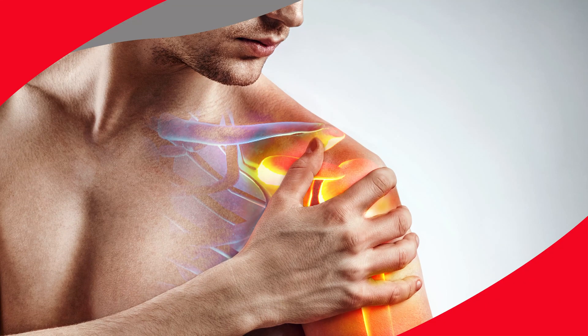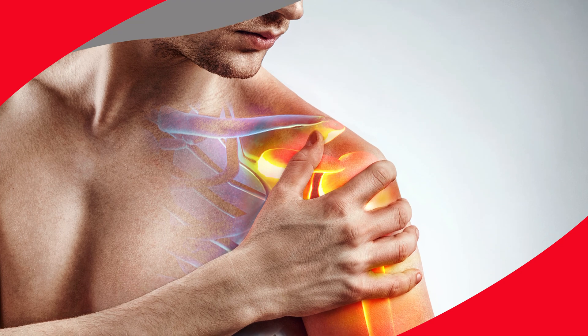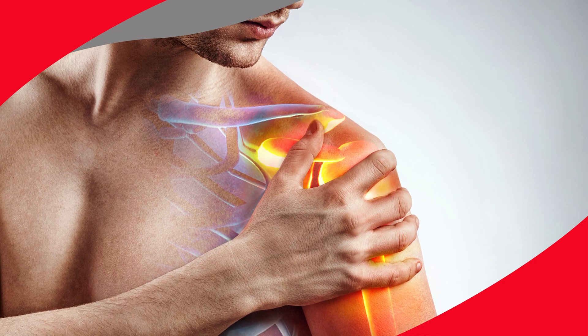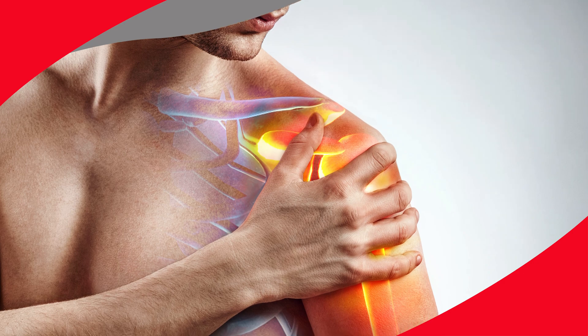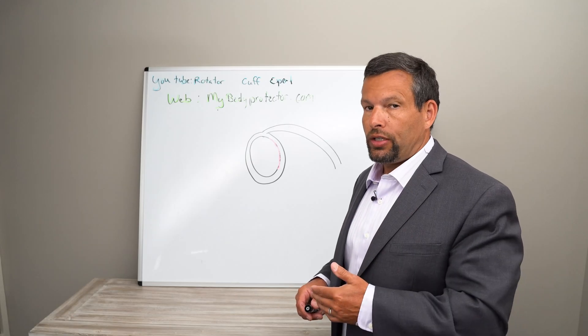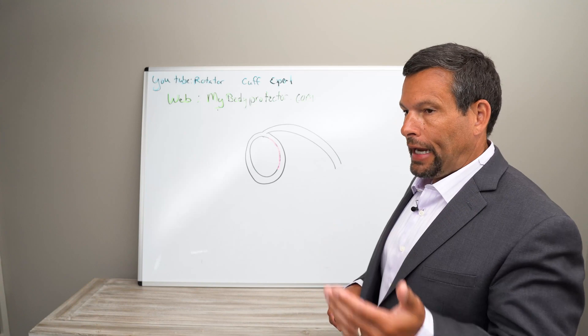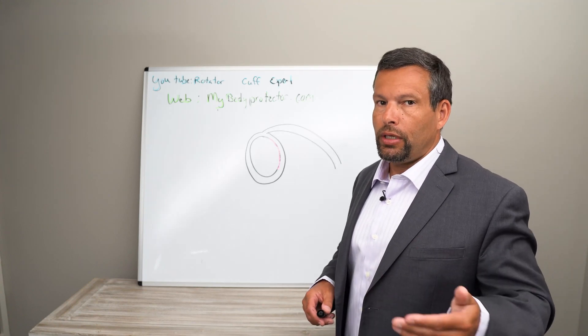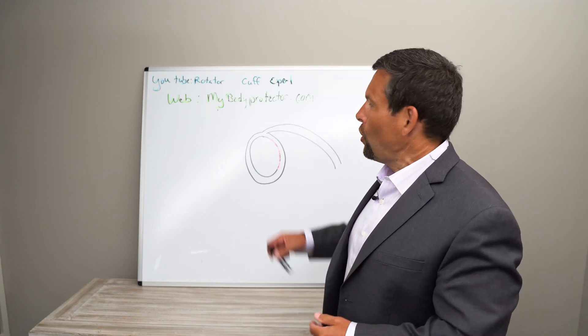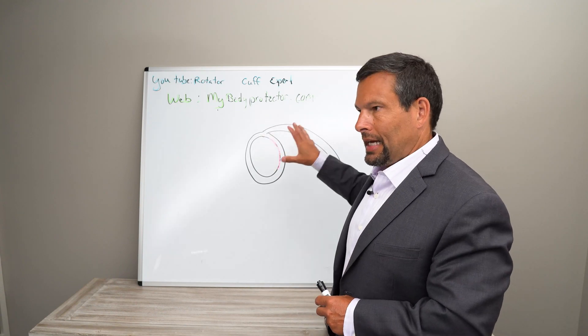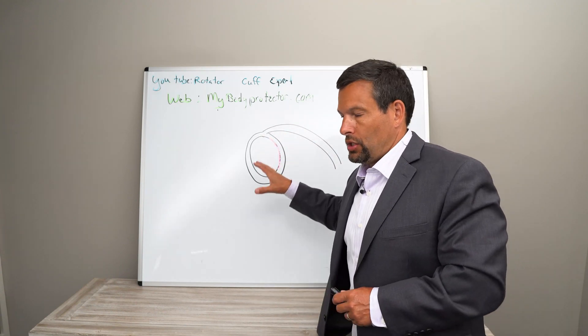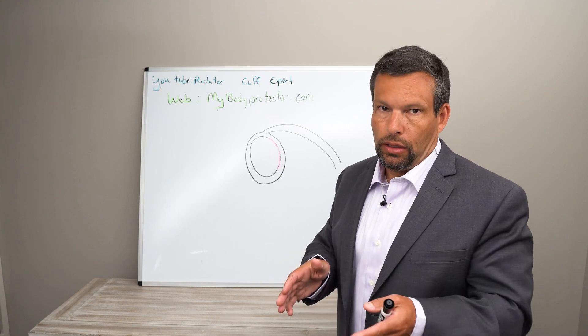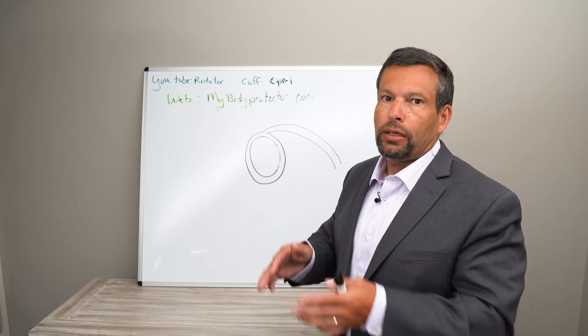Almost always when we have a younger person with a dislocated shoulder, they injure the front of the socket. Oftentimes when we have older patients who dislocate the shoulder, often they either fracture part of the shoulder, break bone as well as dislocation, or they'll tear the rotator cuff. So that's a different process, a different issue and a different process of recovery and treatment.